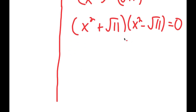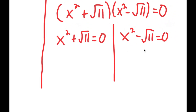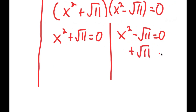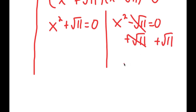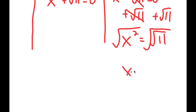Again, I get two equations: x squared plus the square root of 11 equals 0, and x squared minus the square root of 11 equals 0. For x squared minus the square root of 11 equals 0, I add the square root of 11 on both sides so these two cancel out, and I get x squared equals the square root of 11. Now if I take the square root on both sides, the square root of x squared is x, and the square root of the square root of 11 is the fourth root of 11.